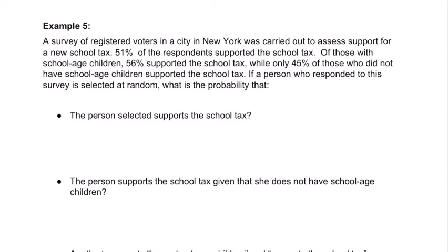We've got a survey of registered voters in New York City, and it was carried out as support of the new school tax. 51% support. Of those with school-age children, 56% support the tax, and only 45% who did not have school-age children supported the tax. If a person who responds to this survey is selected at random, what is the probability that that person supports the school tax?